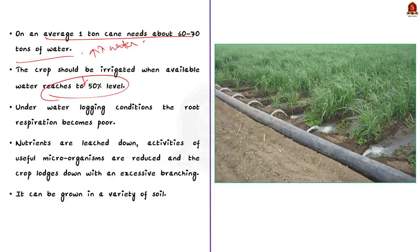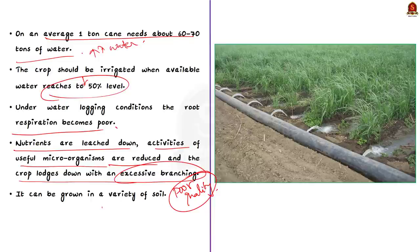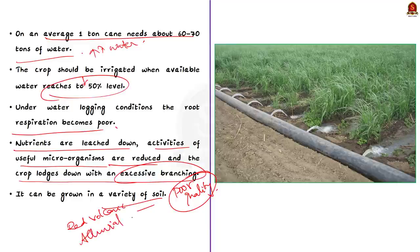The important point to be noted here that under water logging conditions, the root respiration becomes poor, the nutrients are leached down, the activities of useful microorganisms are reduced and the crop lodges down with an excessive branching. Thus the quality becomes poor along with very low crop yield. These all make it necessary to drain the excess water from the field. See sugarcane can be grown in variety of soils such as red volcanic soil and alluvial soils of rivers. That means that it does not require any specific type of soil.